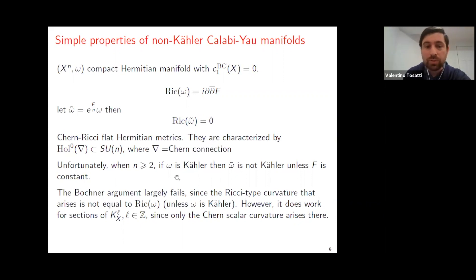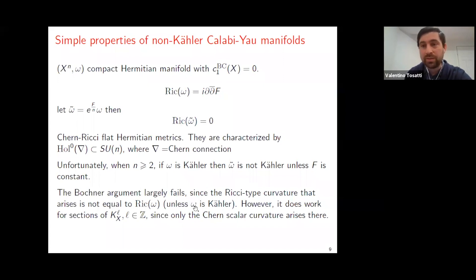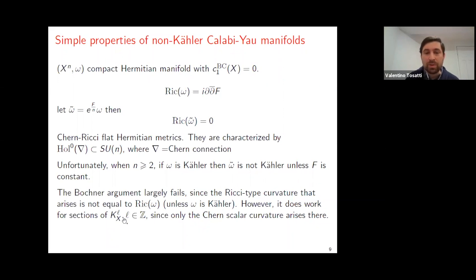Unfortunately, if the complex dimension is two or more, even if you start with a Kähler metric Omega — so your manifold is actually Kähler in the usual sense — and perform this conformal rescaling trick, the conformally rescaled metric is never going to be Kähler unless f was already constant, meaning your original metric was already Ricci-flat. So you cannot use this trick to prove the Calabi theorem in dimensions two or higher, because this conformal rescaling never produces Kähler metrics from a Kähler metric unless you are just scaling by a constant.